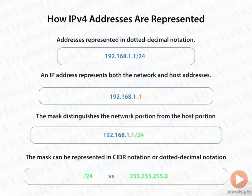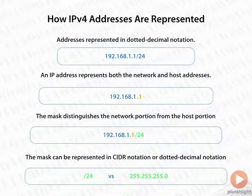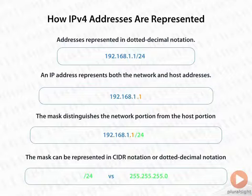The addresses used in these examples — the 10 address space, the 172.16 address space, as well as the 192.168 address space — are all part of RFC 1918, which is our private internetworks addressing space, initially created to help us overcome issues with address depletion.